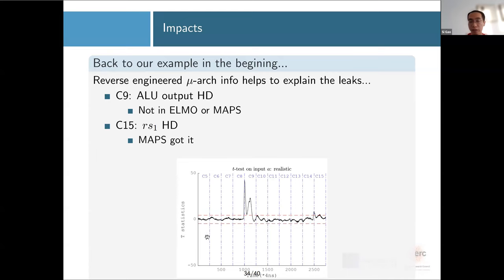Okay, let's go back to our original example in the beginning. Our reverse engineering information will help to explain what is leaking here and why is it captured or not captured in ELMO or MAPS. In cycle 9, we say this is the ALU output Hamming distance. This is not presented in ELMO because ELMO takes ALU input, and not in MAPS because this is not a register. Cycle 15: this is a pipeline register, so MAPS got it. ELMO didn't get it because ELMO was looking at the wrong place.